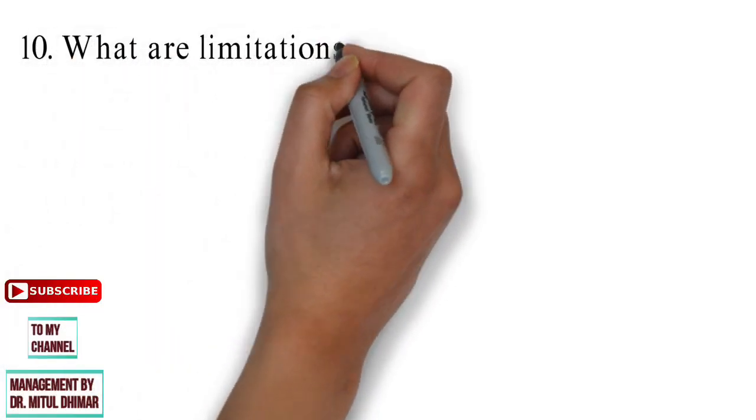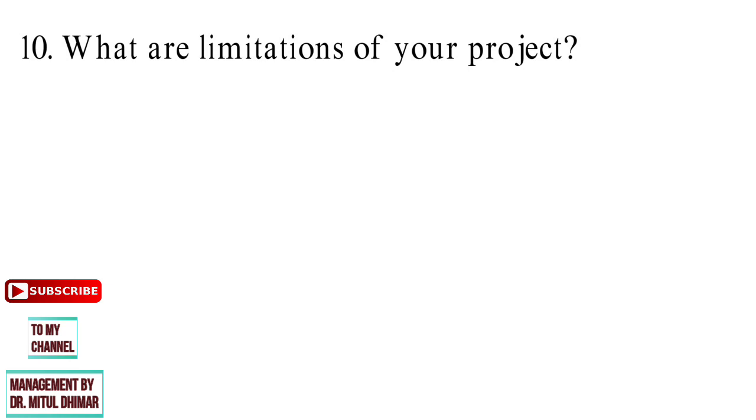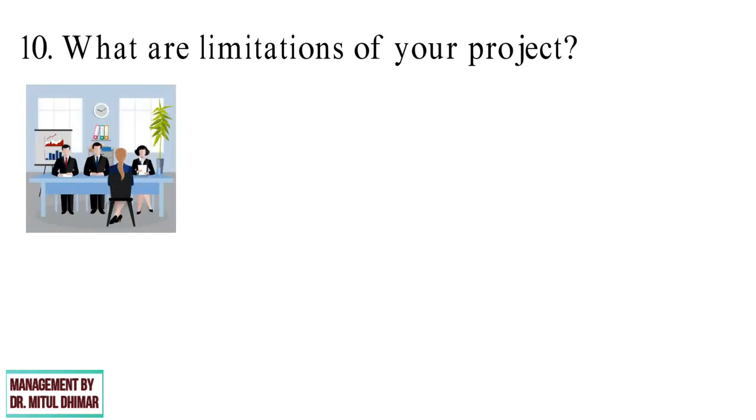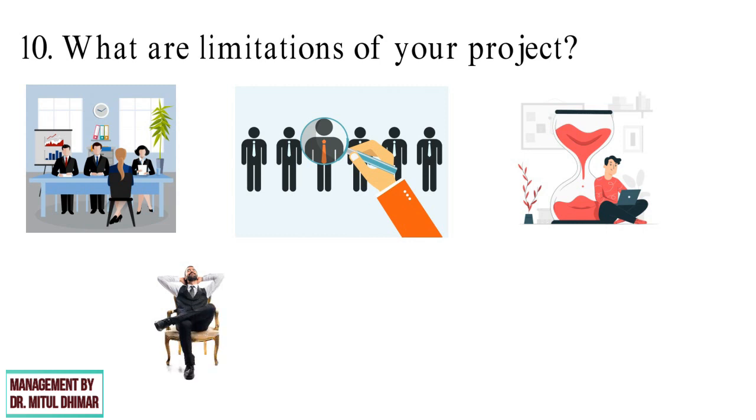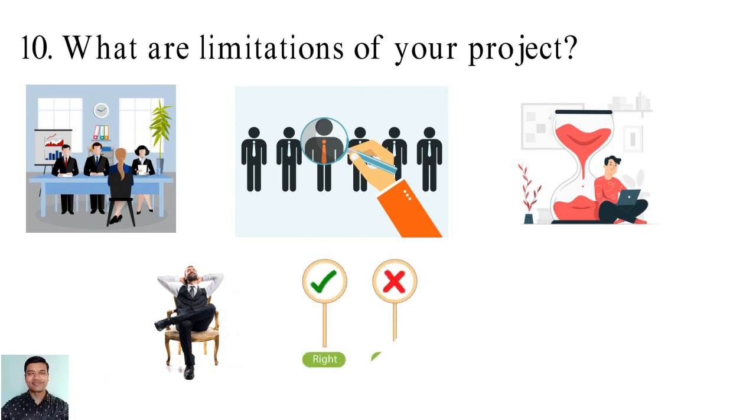Question number 10: What are limitations of your project? This is also one of the important question might be asked in viva. Never ever give answer like your sample size is too low, time constraint, etc. Probable answer can be number 1, respondent may not feel comfortable providing answer that present themselves in unfavorable manner. Number 2, there may also be a possibility of wrong answer being provided by respondents, which may be due to lack of memory regarding the subject.